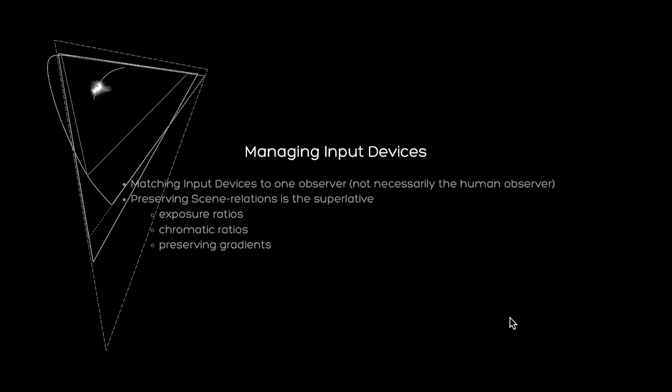With all of this established, we can talk about how to manage different inputs like different cameras. Typically in our industry we transform all the inputs to a common observer. It is a misconception that this observer is always the human observer. Some color management workflows like ACES have specified a reference observer which is basically the 1931 human observer, or a 3x3 matrix away from it.